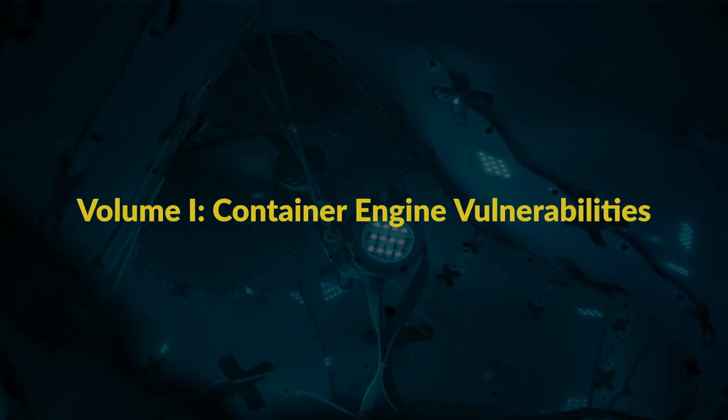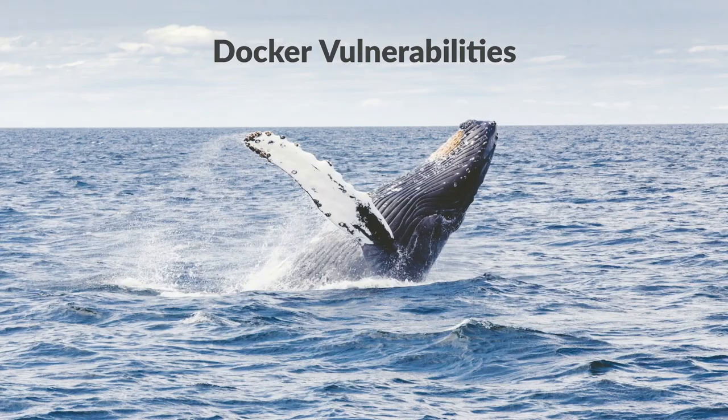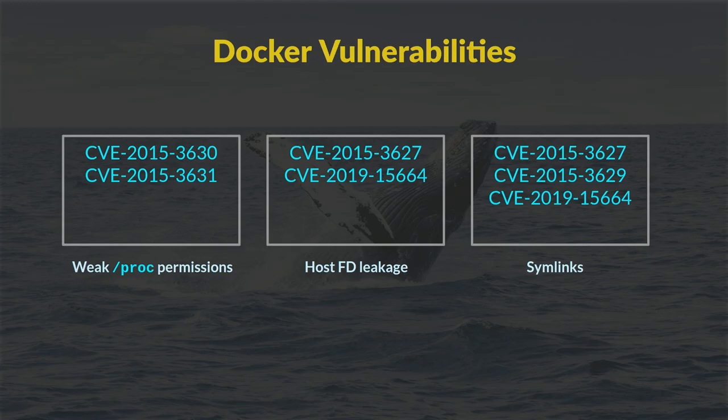After that abbreviated introduction to containers, this section will briefly hop through some vulnerabilities in container engines and their impact. It's going to be pretty light because these things are, for the most part, patched and won't help you too much in the real world. Most Docker vulnerabilities to date can be lumped into a handful of categories: weak proc permissions, host file descriptors, host file descriptor leakage, and symlinks — with FD leakage and symlinks often going hand in hand.